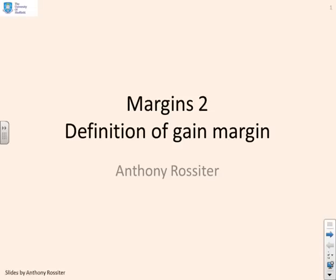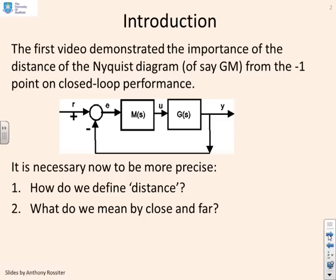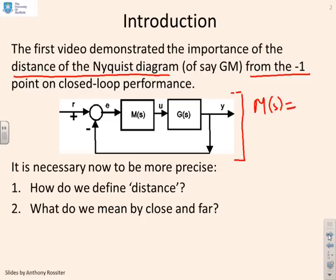This series on margins is now going to introduce some definitions. We begin with the gain margin. The first video demonstrated the importance of the distance of the Nyquist diagram from the minus one point. We're assuming simple closed loop diagrams with a compensator M and a compensator G, and typically for convenience we're going to use M of s equals K for now.